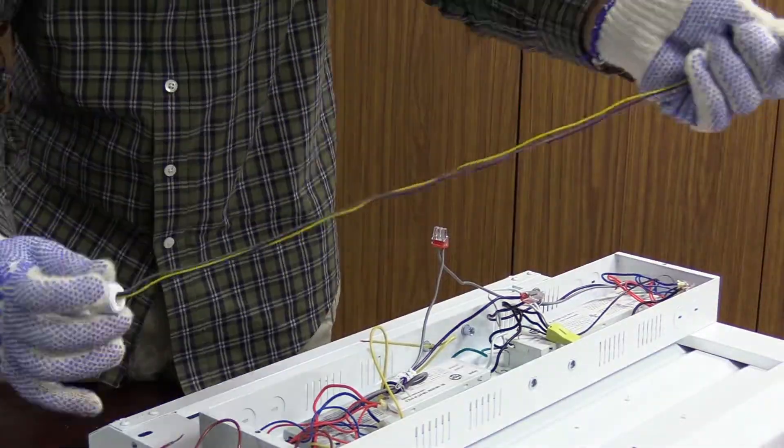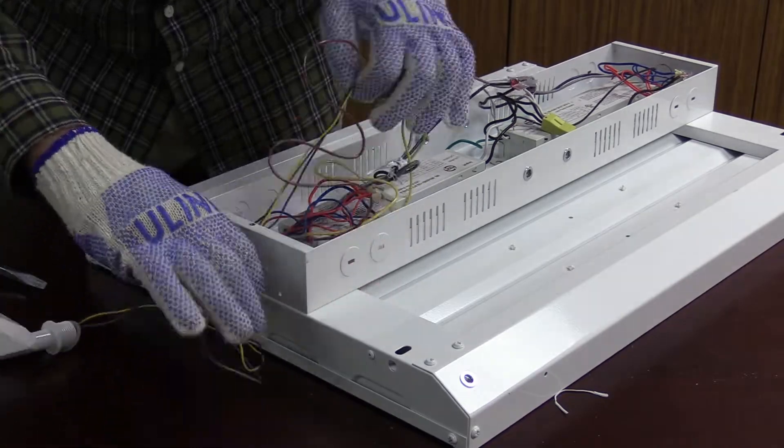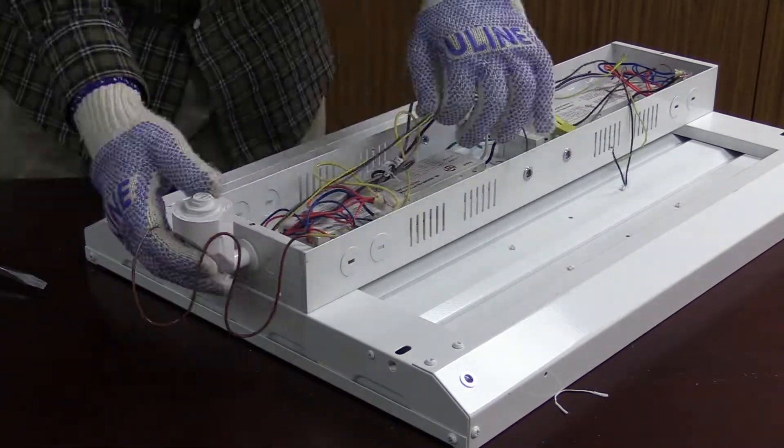Now, we'll run the wires from the CEA adapter through the knockout and secure it with a locking nut.